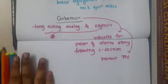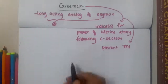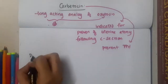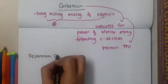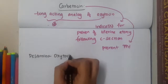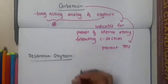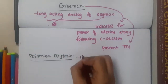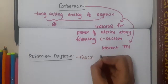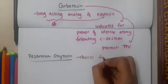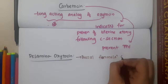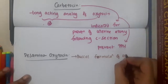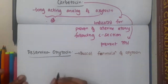The next important drug is desaminooxytocin. What is desaminooxytocin? Desaminooxytocin is also an oxytocin analog. It is a buccal formulation of oxytocin.